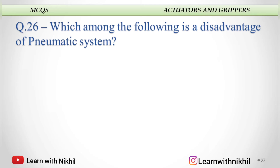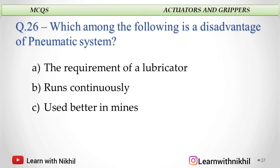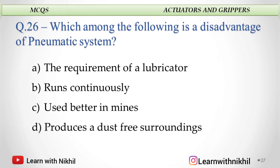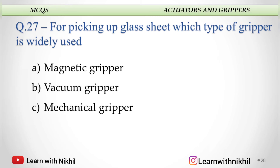Which among the following is a disadvantage of the pneumatic system? A. The requirement of a lubricator, B. Runs continuously, C. Better in mines, or D. Produces a dust-free surrounding? And the answer is the requirement of a lubricator. For picking up a glass sheet, which type of gripper is widely used? A. Magnetic gripper, B. Vacuum gripper, C. Mechanical gripper, or D. Passive gripper? A vacuum gripper is always used for glass sheets or delicate items.